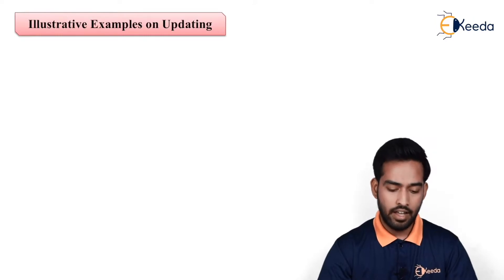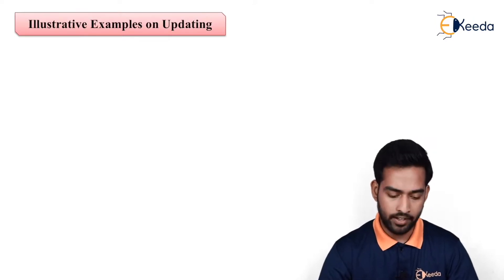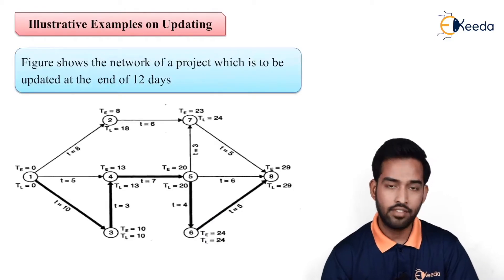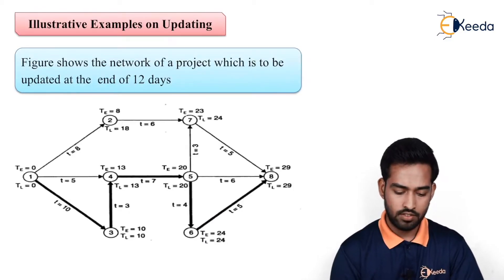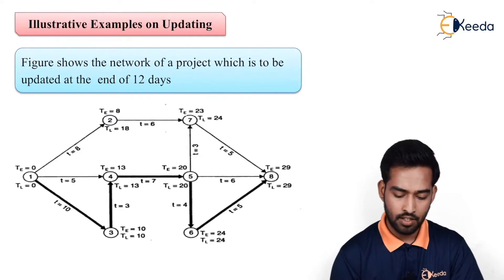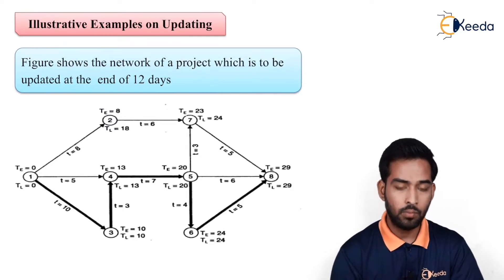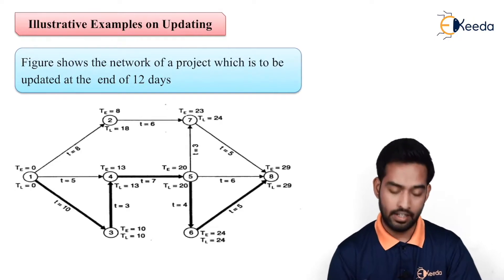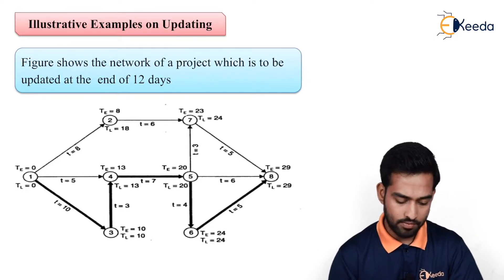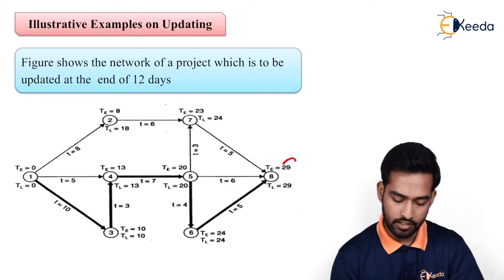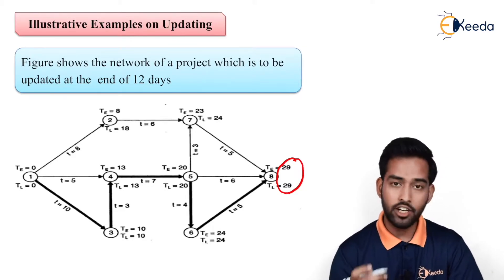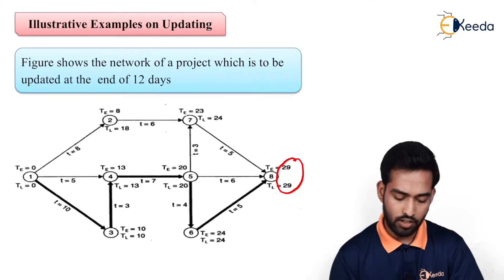Let us start with the example on updating. In this example, the figure shows the network of a project which is to be updated at the end of 12 days. As you can see, the total duration required is 29 days, and we have to update it after 12 days — somewhere before the fourth node we have to update the network.